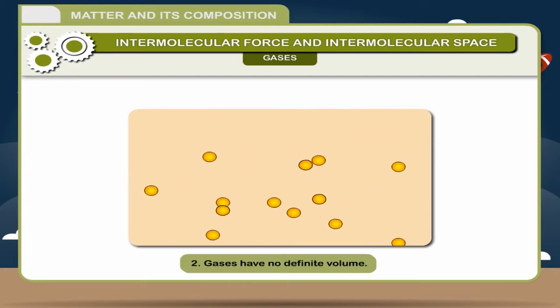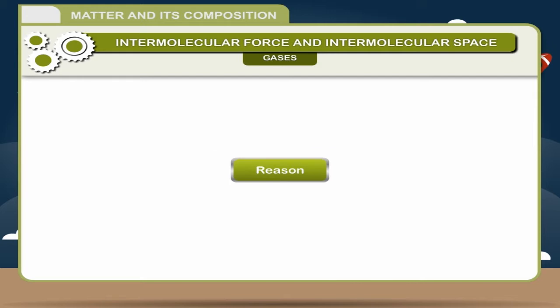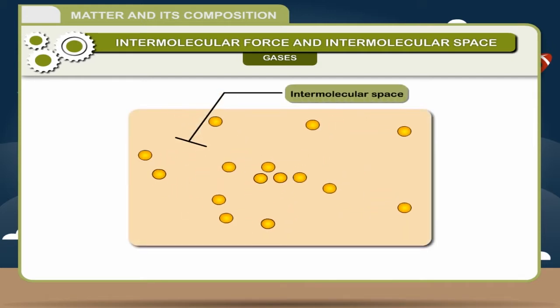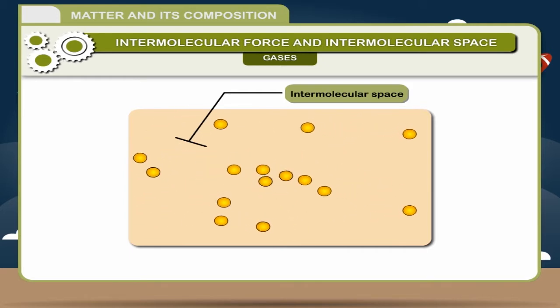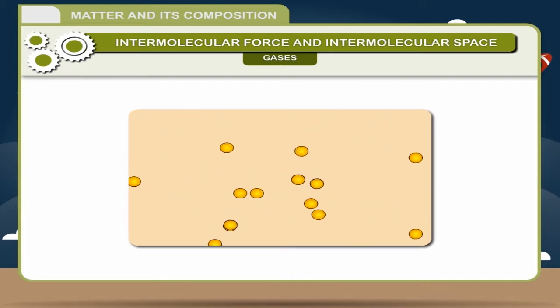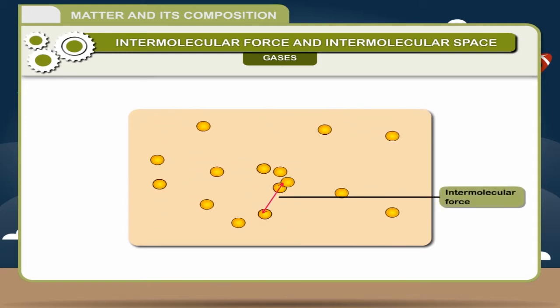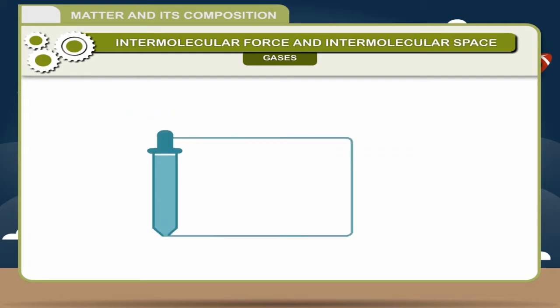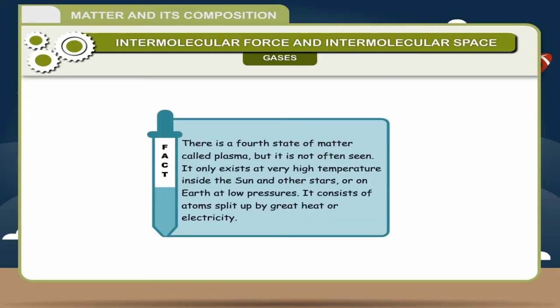Gases have no definite volume. Reason: Gases have large intermolecular spaces between them, with the molecules free to move in any direction. Gases can flow in all directions because of negligible intermolecular force of attraction between their molecules. Fact: There is a fourth state of matter called plasma, but it is not often seen. It only exists at very high temperatures, inside the sun and other stars, or on earth at low pressures. It consists of atoms split up by great heat or electricity.